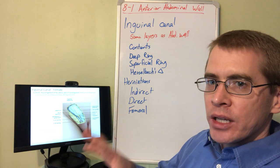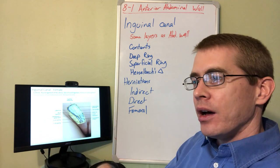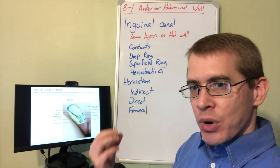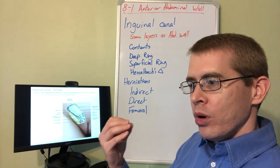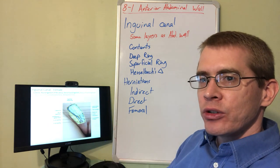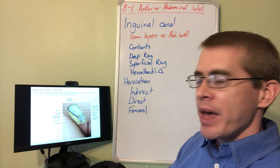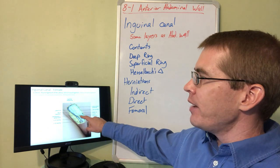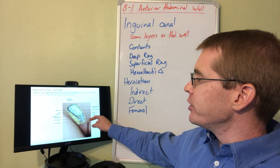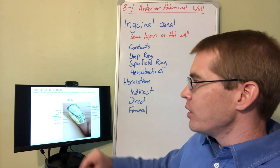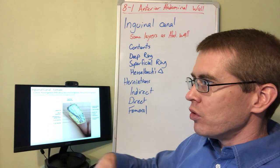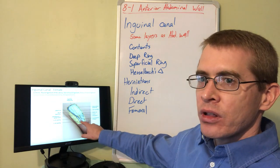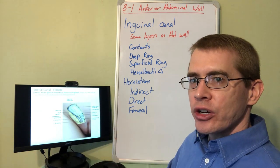Here we have the female inguinal canal, which is much simpler because females have ovaries inside the abdominal cavity rather than testicles outside the body. Those ovaries did not get pulled down by the gubernaculum ovarium into a scrotum during development. The mons pubis of the female is analogous to the scrotal sac of the male — those contents simply weren't pulled down. Females still have an inguinal canal with a superficial and deep inguinal ring. Within that canal, instead of the ductus deferens, they have the round ligament of the uterus, which anchors in the mons pubis and travels deep in the pelvis to anchor to the uterus.